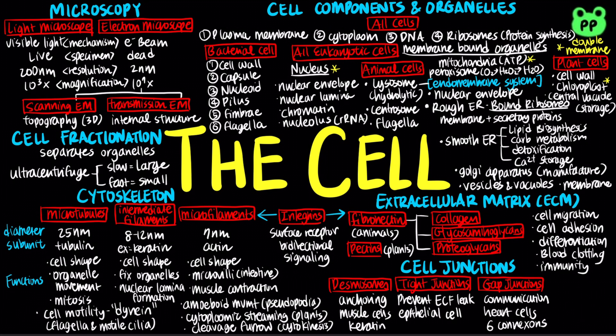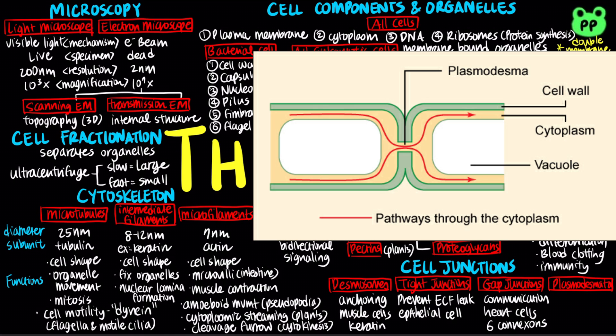Plant cells also contain desmosomes and tight junctions. However, they use a different junction for cell communication known as plasmodesmata, which perforate plant cell walls. Through plasmodesmata, water and small solutes, and sometimes proteins and RNA, can pass from cell to cell.